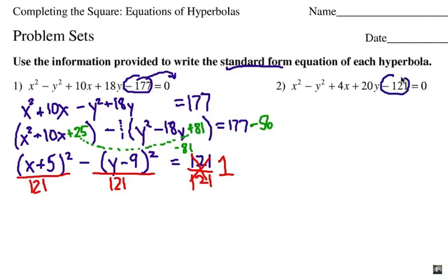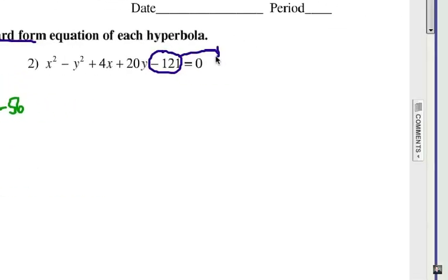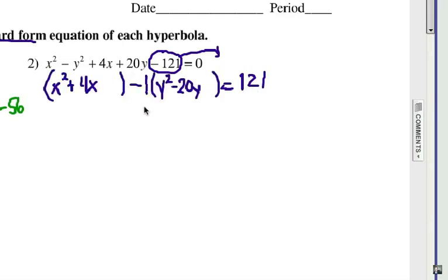Again, we're going to move the constant over to the other side, so we add 121 to each side. Now let's group our x's and y's together. Keeping in mind that we have to factor out a negative 1 for the y groups, because we have to have a subtraction in between. We're going to complete the square, which will be half of 4 is 2, and square it. Half of negative 20 is negative 10, and square it. Positive 100.